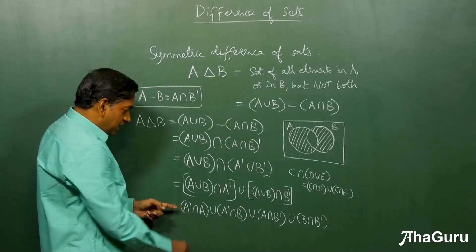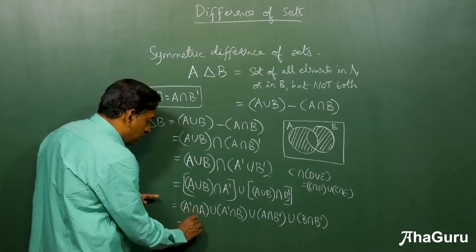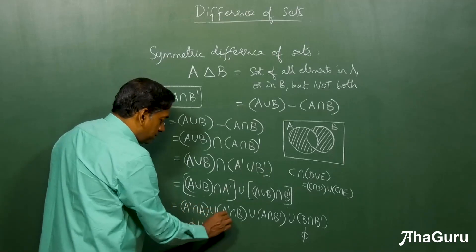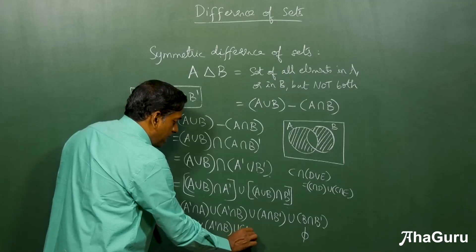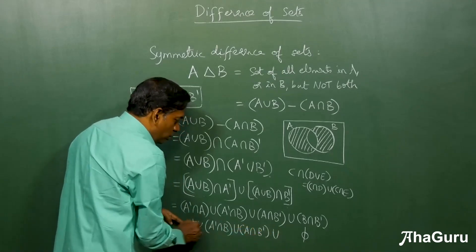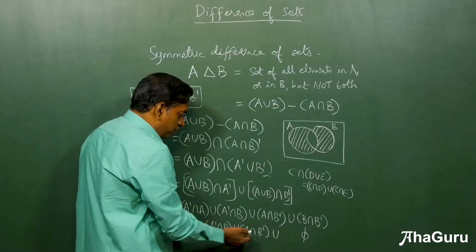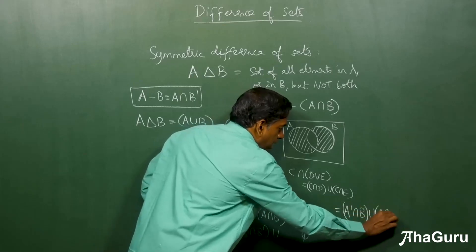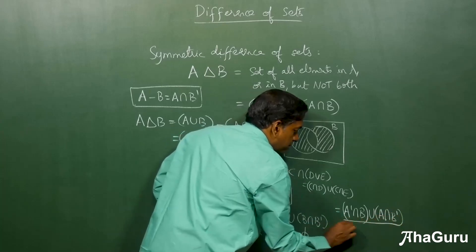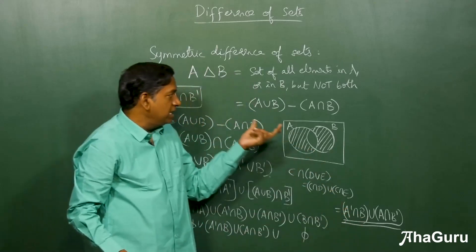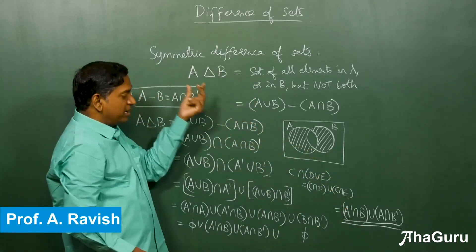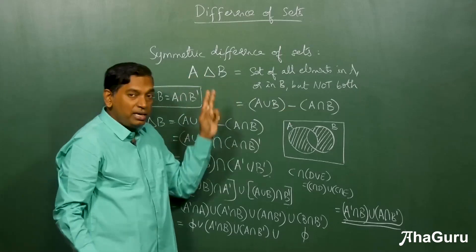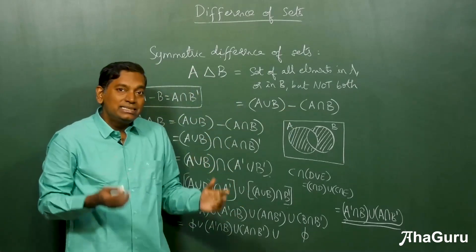A-complement intersection A becomes null, and B-complement intersection B becomes null. What remains is A-complement intersection B and A intersection B-complement. Union with null does not change the answer, so the result is simply (A-complement intersection B) union (A intersection B-complement). This is the simplification for the symmetric difference. We can write this algebraically, or use the Venn diagram form, or simply use the symbol A delta B — all of these give the same answer.